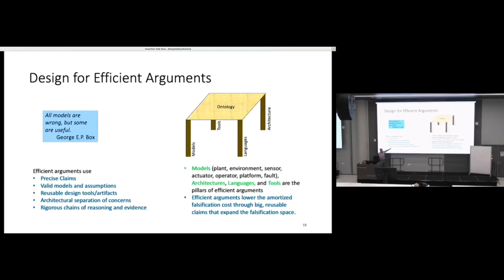How do we design for efficient arguments? Here again is another Sidney Harris cartoon, Then a Miracle Occurs. Again, this is another source of inefficiency. The efficient arguments use precise claims, valid models and assumptions, things that are supported by evidence, reusable design tools and artifacts, things that are widely used and trusted, an architectural separation of concerns and rigorous chains of reasoning and evidence. You want all this to be watertight and wrapped in a workflow where the connection between the reasoning and the evidence and the real artifact don't have any gaps in them. If you think of this as a table with four legs and a surface on top, the four legs of an efficient argument are models, tools, language, and architecture.